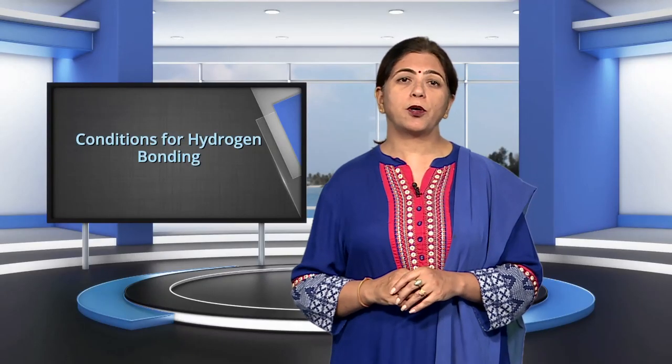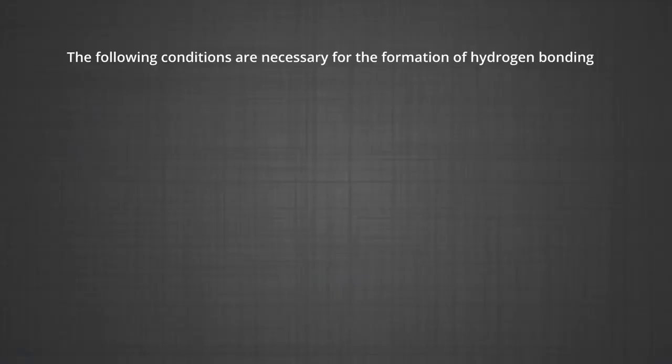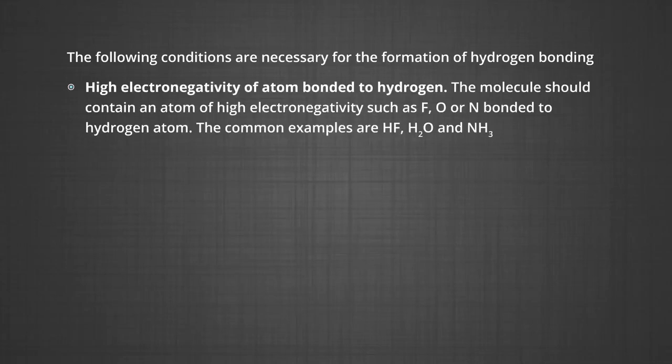Now let me discuss the conditions for hydrogen bonding. The following conditions are necessary for the formation of a hydrogen bond. The first is high electronegativity of the atom bonded to hydrogen. The molecule should contain an atom of high electronegativity — fluorine, oxygen or nitrogen — bonded to a hydrogen atom. Common examples are hydrogen fluoride, water and ammonia (NH₃).